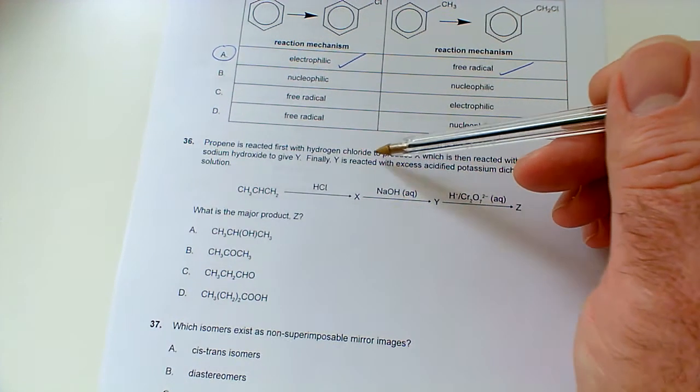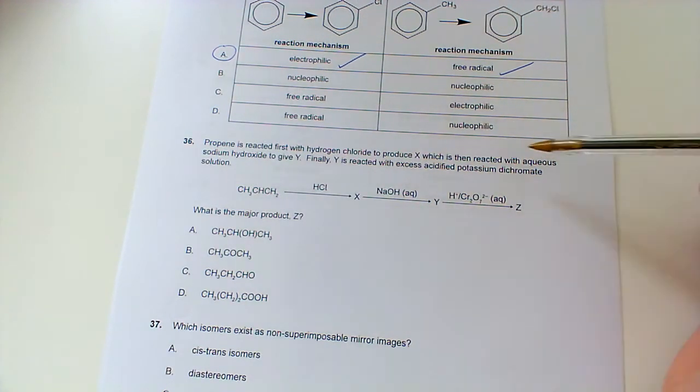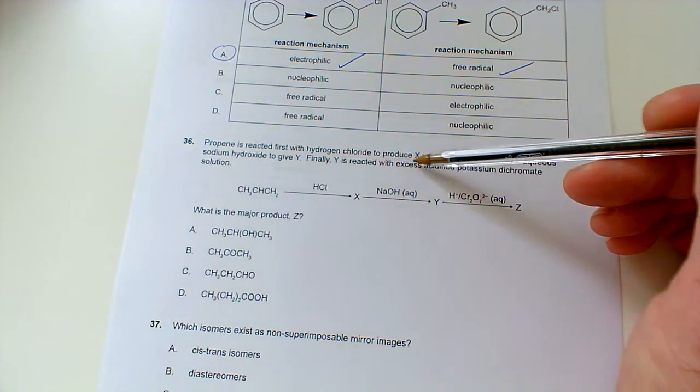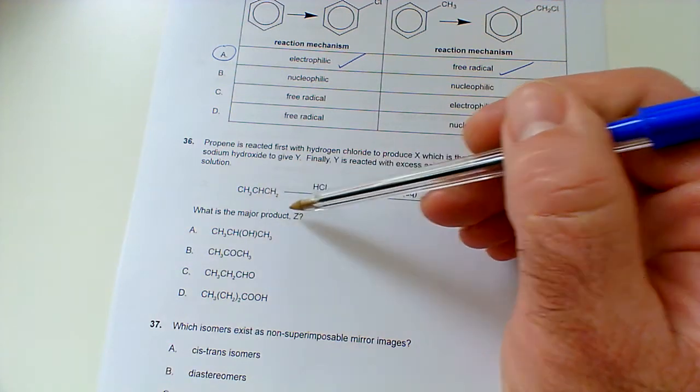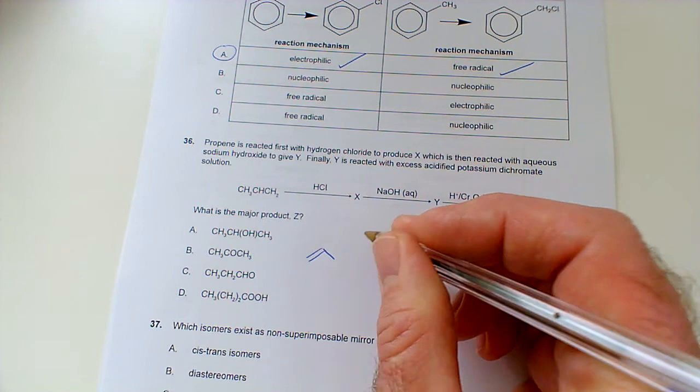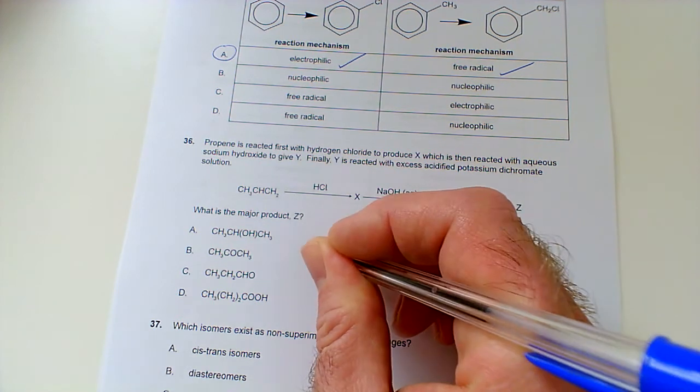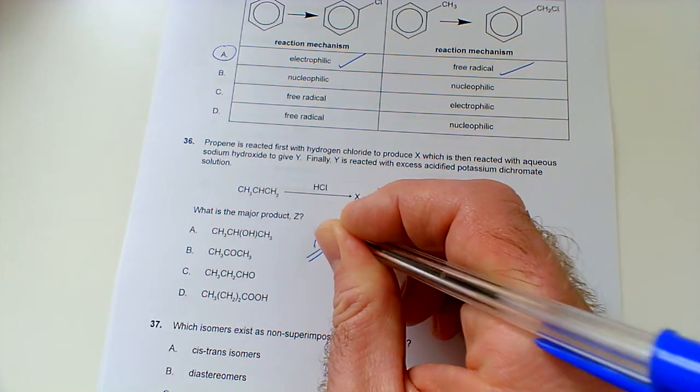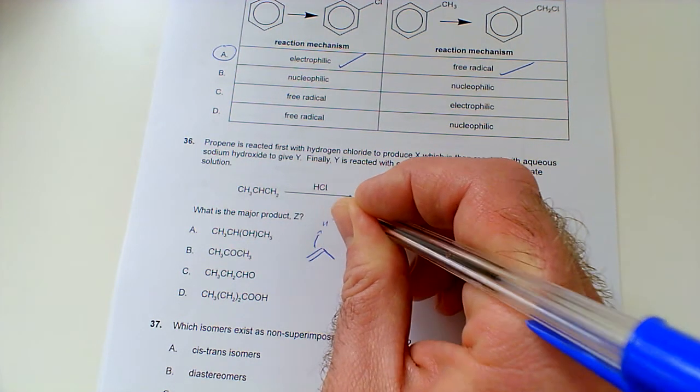23, propene is reacted first with hydrogen chloride to produce X, and then react with aqueous sodium hydroxide to give Y. Finally, Y is reacted with excess acidified potassium dichromate. What is the major product? Okay, well, this is propene. Now, when we react that with HCl, we've got two possibilities,